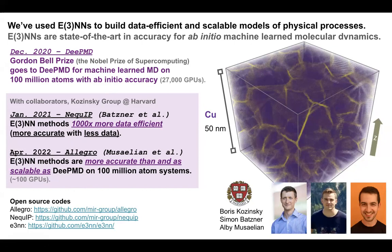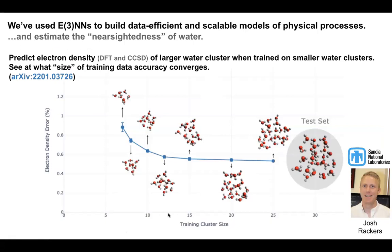Roughly a year later, Allegro came out from Simon, Alby, and Boris's group. It switched from a message-passing paradigm to a fixed cutoff radius: when making a force prediction for a given atom, you only consider up to some local cutoff. This allowed an NequIP-like equivariant network to scale to 100 million atom systems on roughly 100 GPUs. All these codes are open source and connect with LAMMPS, making them very usable for the community.